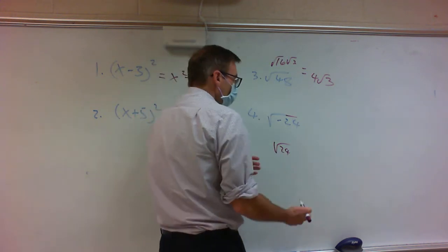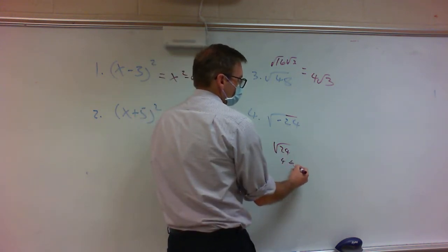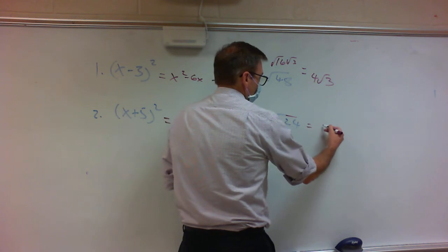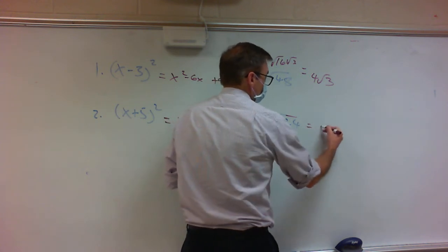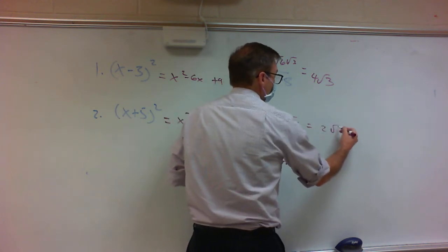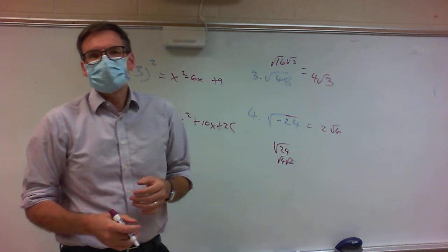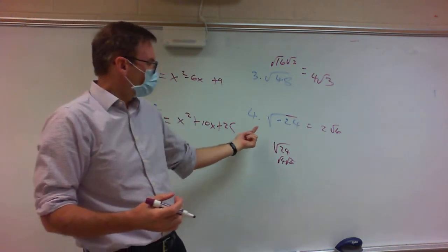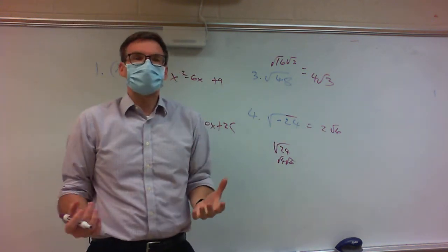When I take the square root of 24, that's going to give us 4 times 6. So that's going to give me the square root of 4 times the square root of 6, which gives me 2 times the square root of 6. Now, there's the issue of where do you stick the i — because if you take the square root of a negative, you've got to stick an i.